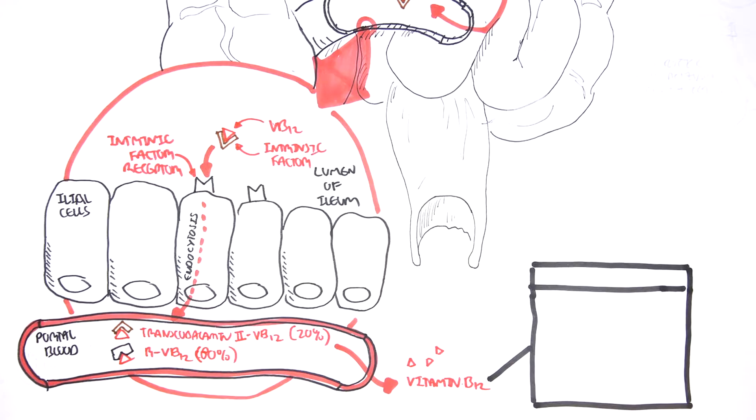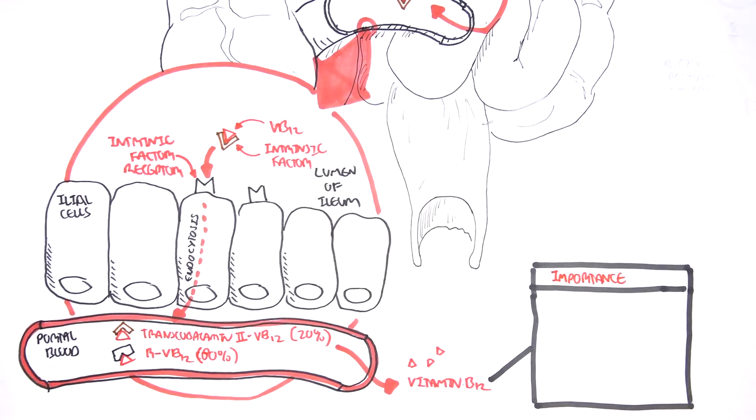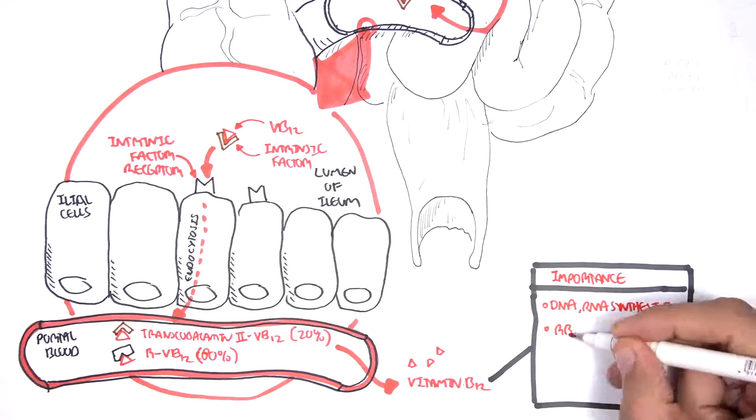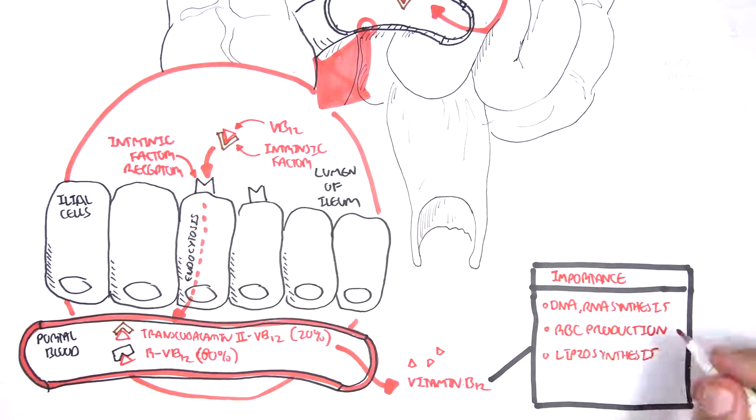The vitamin B12 is important for DNA and RNA synthesis, red blood cell production, as well as lipid synthesis, which is important for maintaining healthy nerve cells, because by lipids, I mean myelin sheath, which are on your nerve cells.